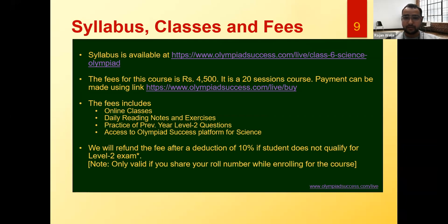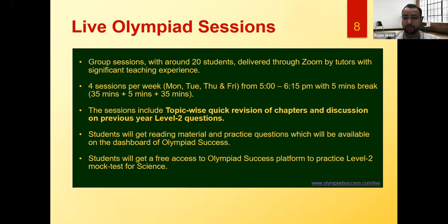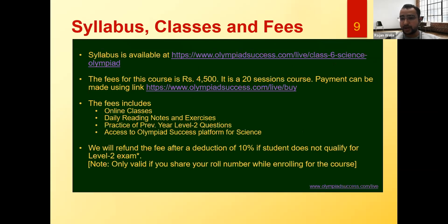The days for this course are Monday, Tuesday, Thursday, and Friday, and the class timing is 5 to 6:15 PM. We'll do topic-wise quick revision of each and every chapter, then discuss previous year Level 2 questions. You'll get reading material and practice questions on the Olympiad Success dashboard, plus Level 2 mock tests. The syllabus link will be shared in the chat box. The fee for this course is ₹4,500 for 20 sessions, which includes online classes, daily reading notes, exercises, and access to the Science reading material and Level 2 mock tests.